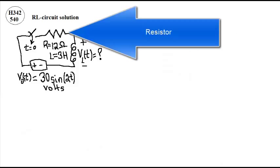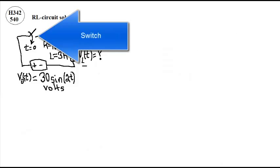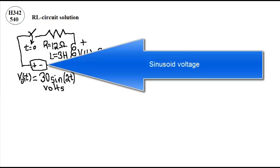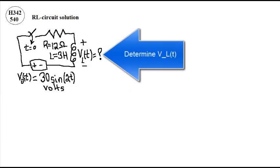We have a resistor, inductor, switch, sinusoid. Determine the voltage across the inductor as a function of time.